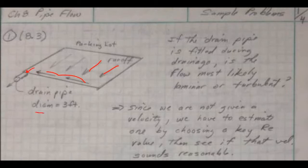So everything's accumulating in that pipe, and it's a big drain pipe that's three feet in diameter. So if the drain pipe is filled during the drainage, is it laminar or turbulent? Would you think, not knowing anything else? That's kind of hard—you're not given a lot of information.